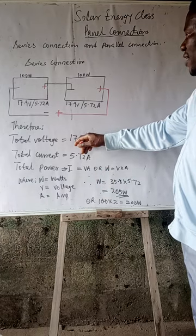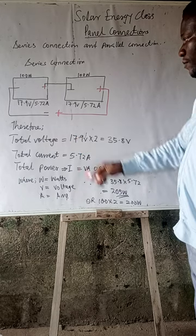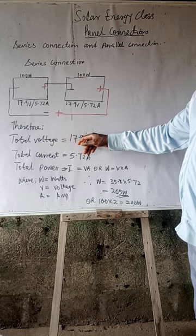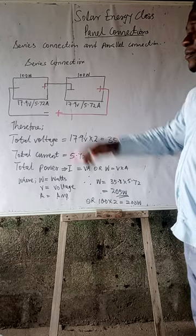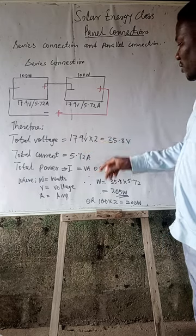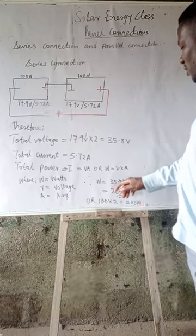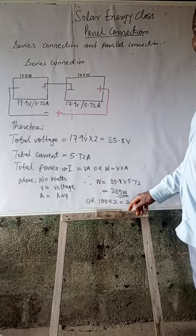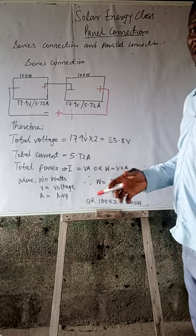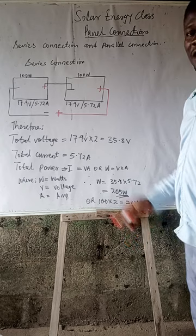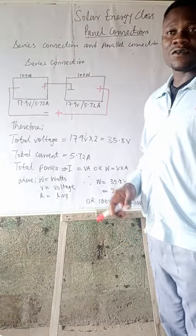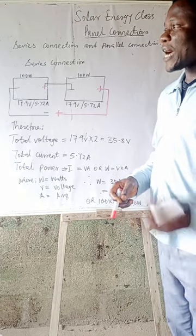Based on the panel configuration, because some panels will not give you exactly 17.9 volts depending on company production. There are some companies where a 100 watt panel is below this, so when you run this calculation it gives you exactly 200 watts. But some companies, based on how effective and efficient their panel is, give you above 200 watts.